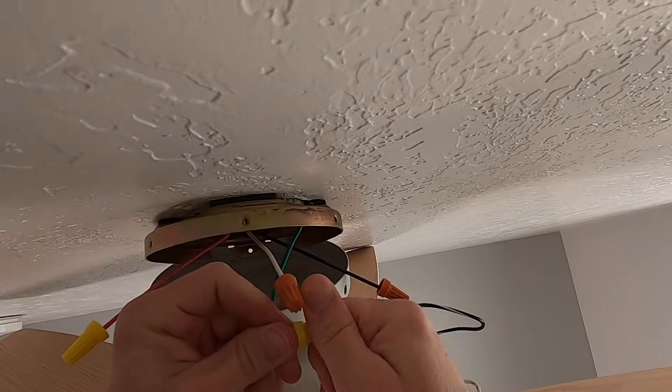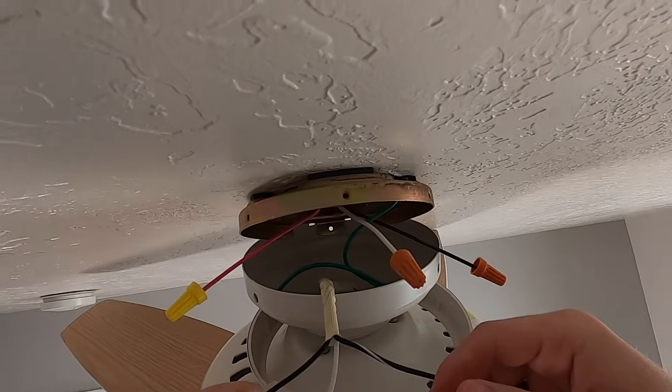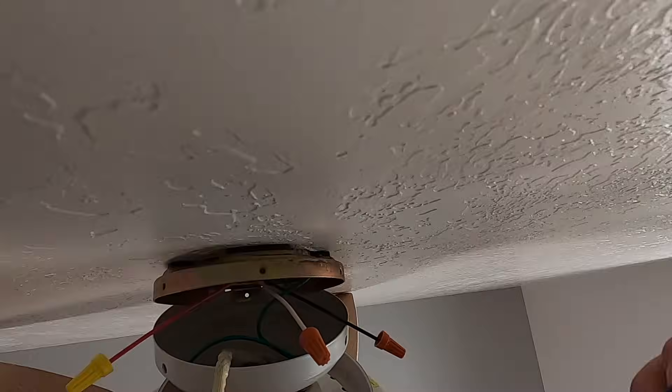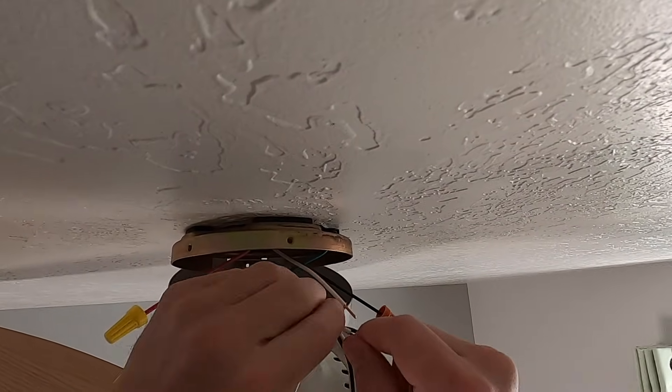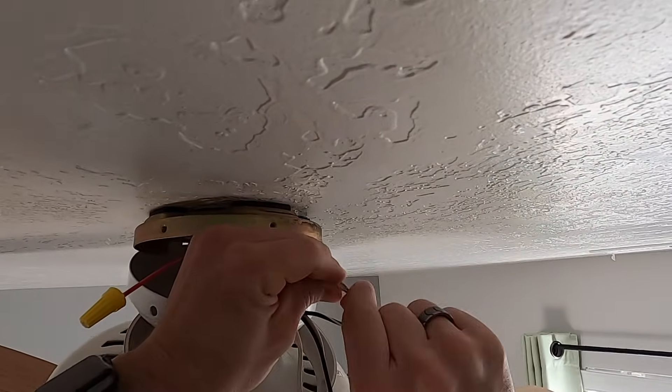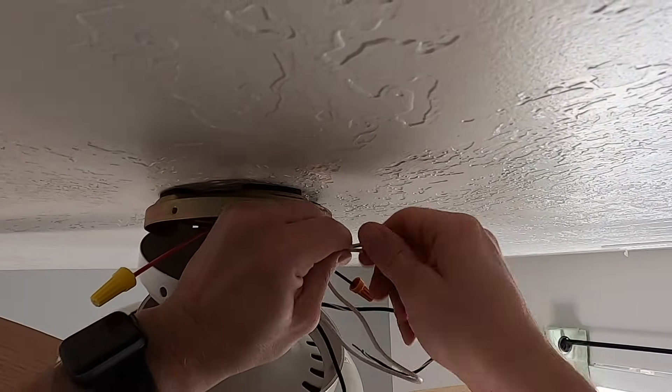Now, besides the ground, you should have three other wires coming out of your fan unit. It should be a black wire, a white wire, and a unique wire. This unique wire might be blue. In this case, it's black and white striped. Now, the second easiest besides the ground is the white. The white, you just connect to the white. This is your neutral wire.